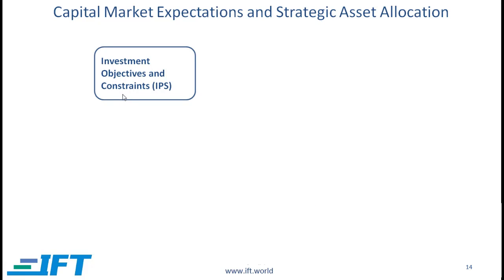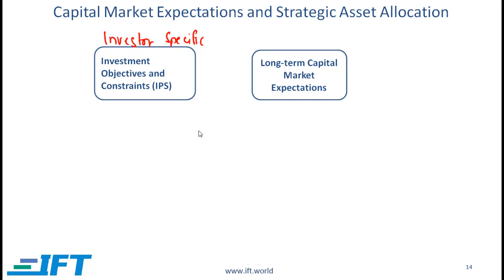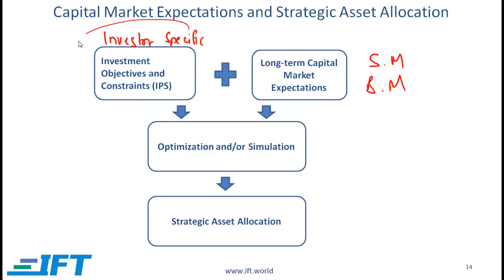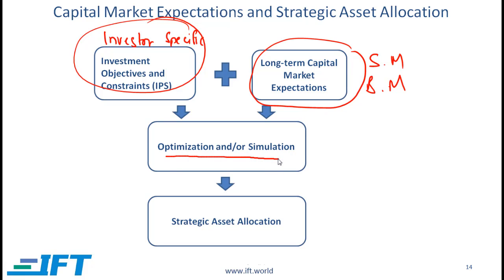The investment objectives and constraints we have talked about so far are all investor specific. Before we can do a strategic asset allocation, we also need to have a view on capital markets. We therefore need to define the long-term capital market expectations, involving our expectations related to the stock market, the bond market, and markets for other asset classes. We combine investor information with market information, run through an optimization or simulation exercise, and then come up with the strategic asset allocation.